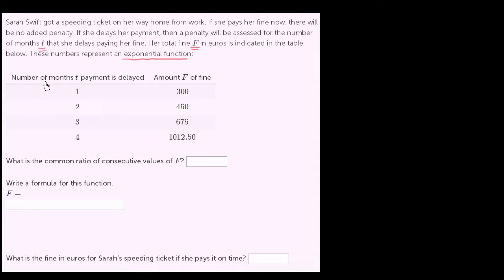These numbers represent an exponential function. So they give us the number of months that the payment is delayed, and then the amount of fine. This is essentially data points from an exponential function. Just to remind ourselves what an exponential function would look like, this tells us that our fine as a function of the months delayed is going to be equal to some number times some common ratio to the t power.